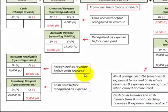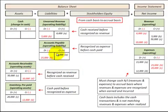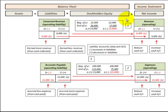We have to reconcile these asset and liability accounts on the balance sheet to our net income revenue and expense accounts, from a cash basis to an accrual basis. I'm going to use T-accounts to change our net income from a cash basis to an accrual basis, looking at beginning and end of year changes in these asset and liability accounts and how we would adjust them to realize revenues and expenses.